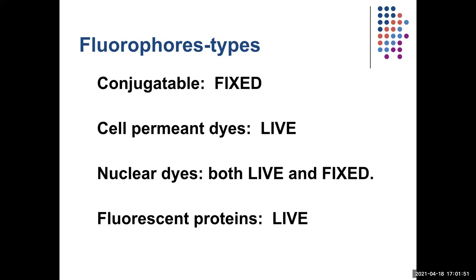When we're talking about conjugatable fluorophores — like Alexa 488, FITC (also known as fluorescein), rhodamine, and the classic first kinds — we're talking about imaging something that is fixed, so it's dead. It's stopped in time and place. You can image it to your heart's content, except for issues like bleaching. You can make a slide and keep it generally up to a year if you put it in the freezer and keep it in the dark. If it's fixed, you can image it today, tomorrow, months from now — nothing's going to change.